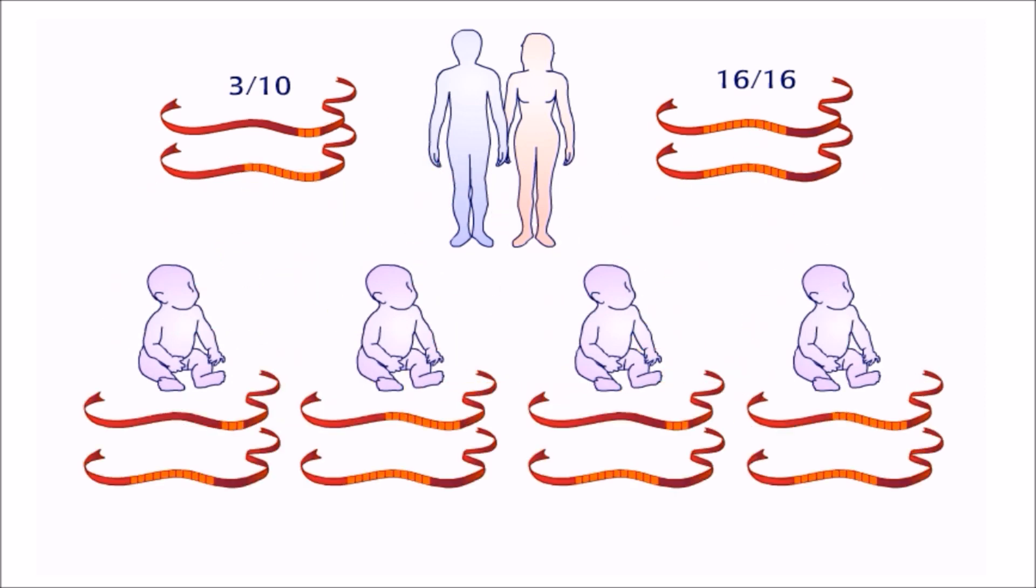In the next generation, the father can contribute either a 3 allele or a 10 allele, but the mother contributes a 16 allele. Statistically, half of these children will inherit a 3/16 genotype and half will inherit a 10/16 genotype.